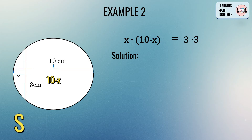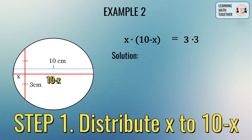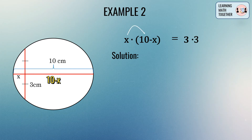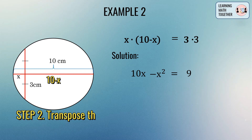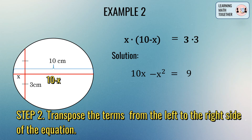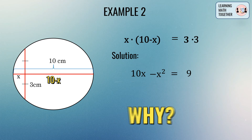To solve for x, the first step is to distribute x into (10 minus x). So x times 10 equals 10x, and x times negative x equals negative x squared. Then multiply 3 times 3, which equals 9.